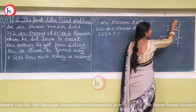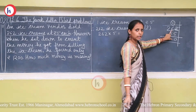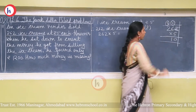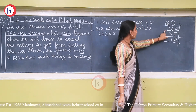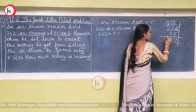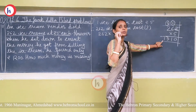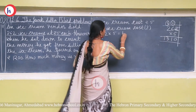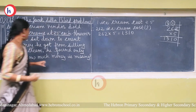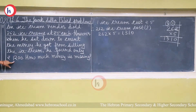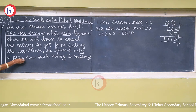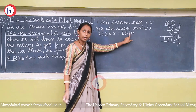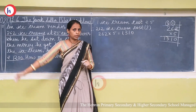Multiplying 262 by 5: 5 × 2 = 10, write 0 carry 1. 5 × 6 = 30, plus 1 = 31, write 1 carry 3. 5 × 2 = 10, plus 3 = 13. So the total cost of 262 ice creams is rupees 1310. He should have had rupees 1310, but found only rupees 1200.